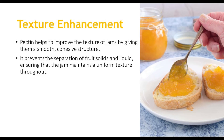Pectin helps to improve the texture of jams by giving them a smooth, cohesive structure. It prevents the separation of fruit solids and liquid, ensuring that the jam maintains a uniform texture throughout.